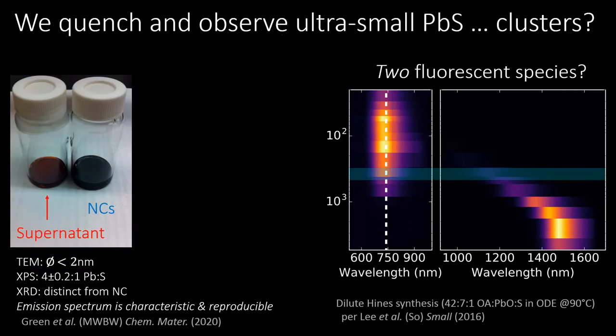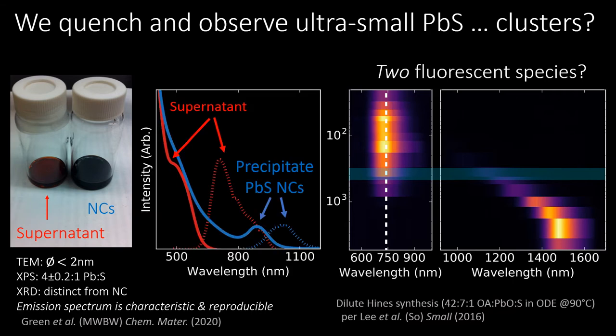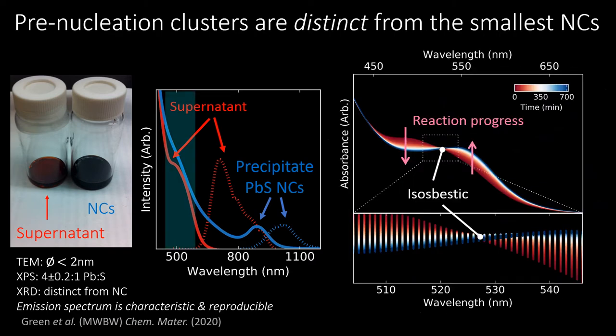Taking a slice in time, we observed two species: a dark solution consistent with the red-shifted nanocrystals, and a red solution containing sub-2 nm, extremely lead-rich particles. Taking the absorption spectrum, we observed that the red solution is fairly featureless. However, monitoring its evolution overnight, we observed its conversion to small nanocrystals through an isosbestic point. This indicates that the red solution contains species distinct from even the smallest PbS nanocrystals, possibly being even smaller.